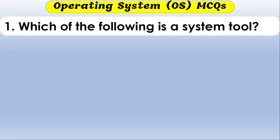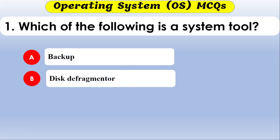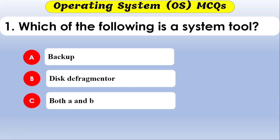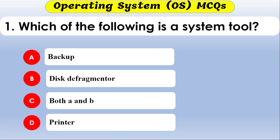The first question is: which of the following is a system tool? The options are: backup, disk defragmenter, both A and B, and printer. The correct option is both A and B — backup and disk defragmenter are system tools. The printer is not a system tool.